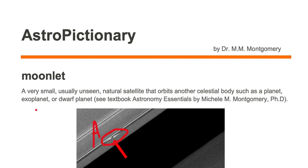Usually moonlets are very small, unseen, natural satellites that orbit another celestial body such as a planet, exoplanet, or dwarf planet — which in this case is a moonlet that's orbiting planet Saturn.